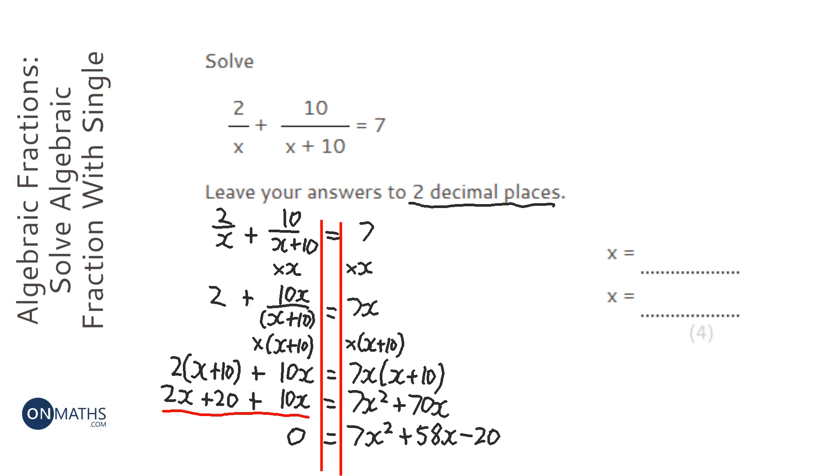So I press equals and it gives me the answer of 0.33. And then I go back and change that plus to a minus. It saves me having to write it out again. Now if you don't know how to do that, then please type in onmaths quadratic formulae and there's loads and loads of videos we've put out on how to do that. And those are my two answers.